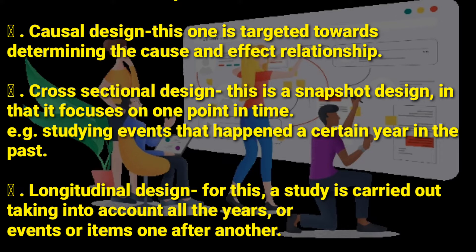Cross-sectional design is a snapshot design in that it focuses on one point in time. For example, studying events that happened in a certain year in the past, like studying events that happened in 2020 — such as the COVID lockdown. That is cross-sectional design: it focuses on one point in time.